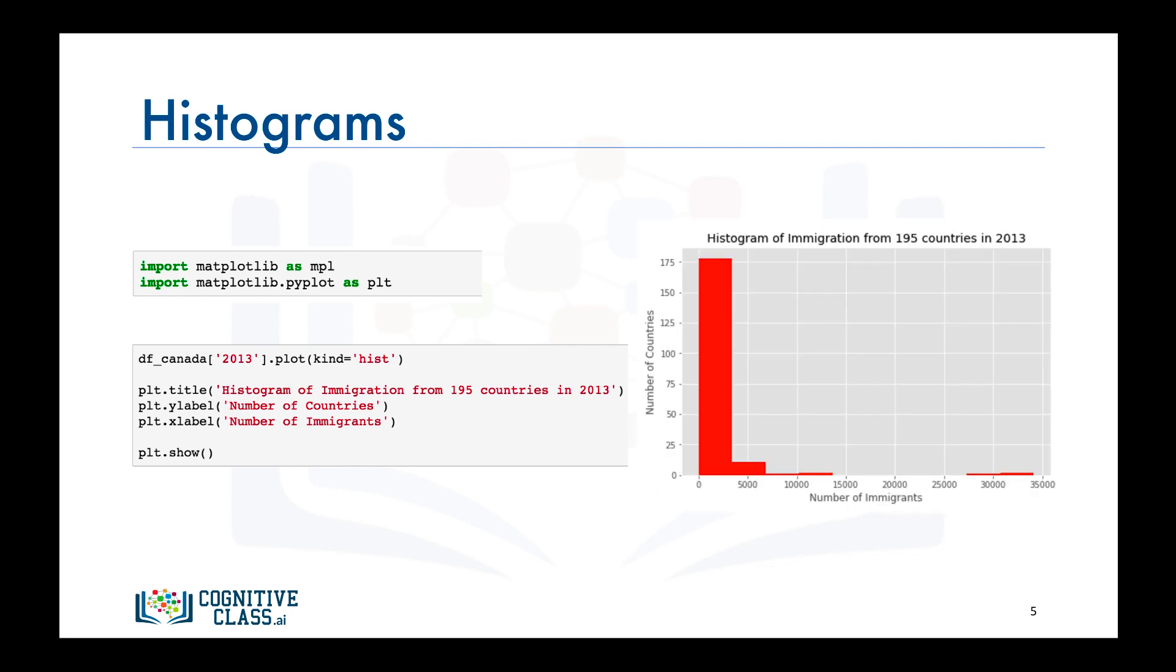And there you have it. A histogram that depicts the distribution of immigration to Canada in 2013. But notice how the bins are not aligned with the tick marks on the horizontal axis. This can make the histogram hard to read. So let's try to fix this in order to make our histogram more effective.